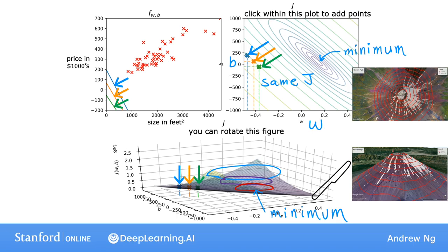So it turns out that the contour plots are a convenient way to visualize the 3D cost function j, but in a way that's plotted in just 2D.